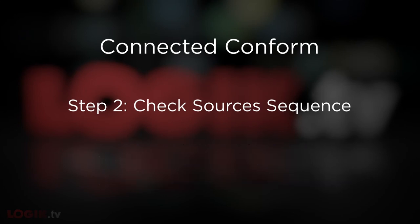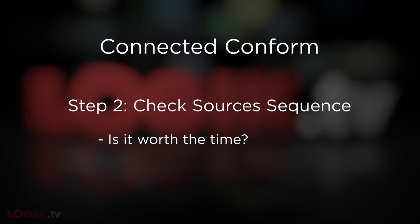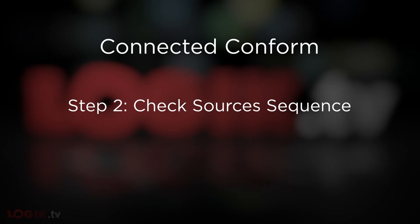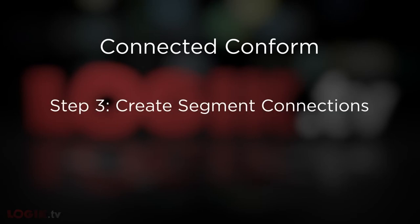Those are the three steps for checking your sources sequence. It could seem like a lot of effort, and you technically can use the connected conform without checking it at all, but once you know what to look for this is absolutely worth your time. In a normal commercial scenario it only takes a few minutes, gives you invaluable information about where your shots are used, and saves you time in the long run. With that in mind, once your sources sequence is in good shape, step three is to create the connections between your clips.